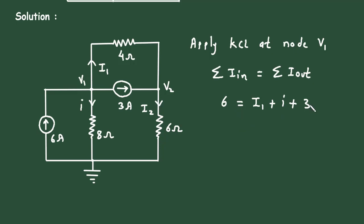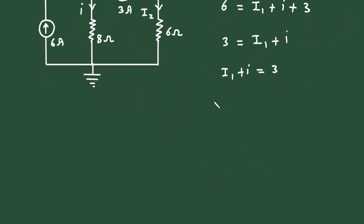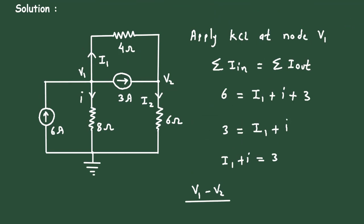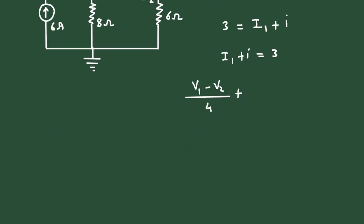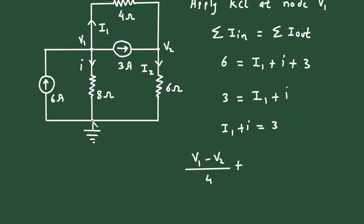If we take the 3 to the other side, it becomes 6 minus 3, so 3 equals I1 plus I. Now we convert I1 into voltage form: it will be V1 minus V2 divided by 4 ohm, plus current I, which is V1 minus V2 divided by 8, equals 3.